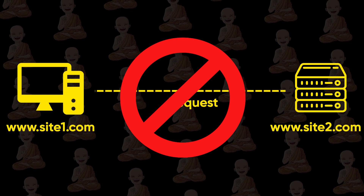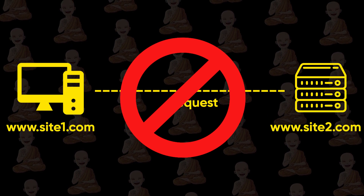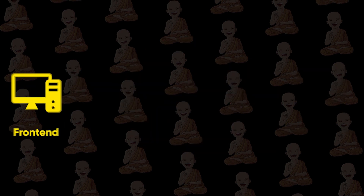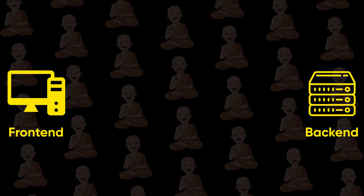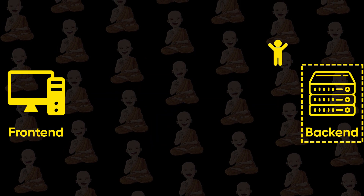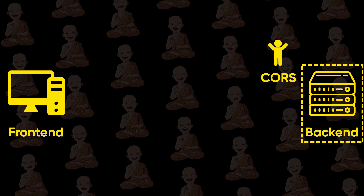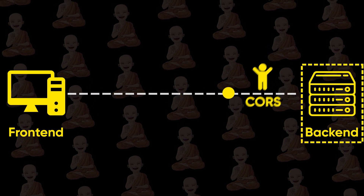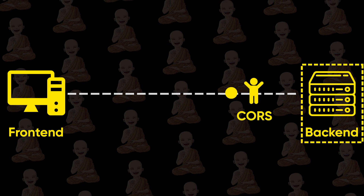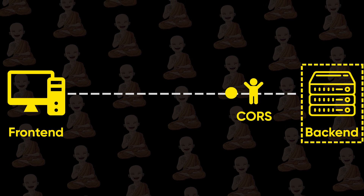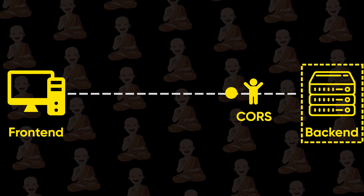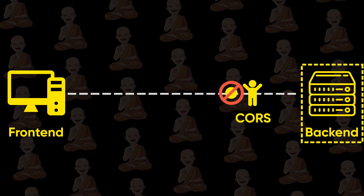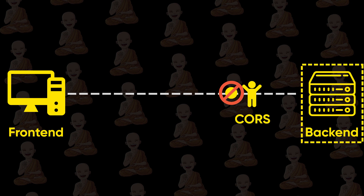I think that's a little confusing, so let's understand with a real example. Here's a frontend and backend. The backend has one gatekeeper, which is CORS. When the frontend sends a request to the backend, first CORS comes and asks that request what's your origin. And if the origin is not the same as the server, then CORS does not allow that request to enter the server.